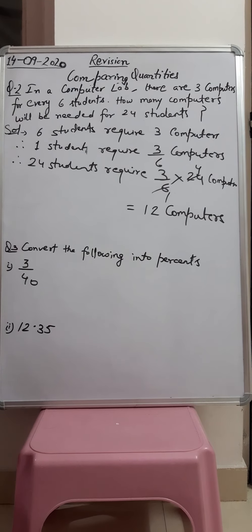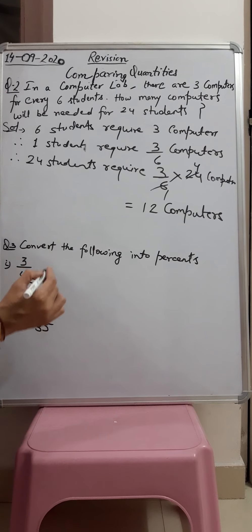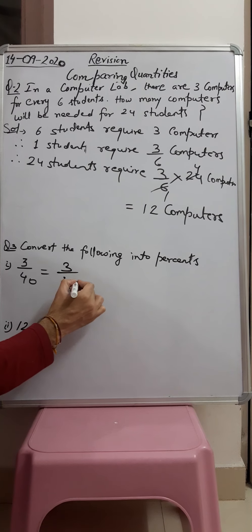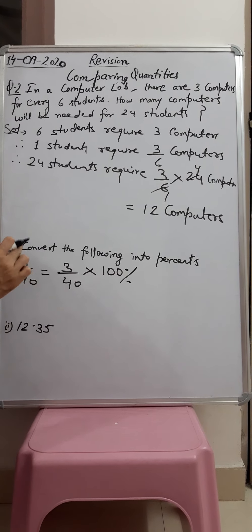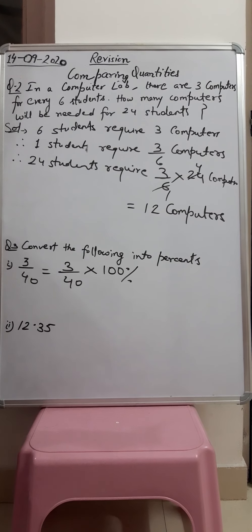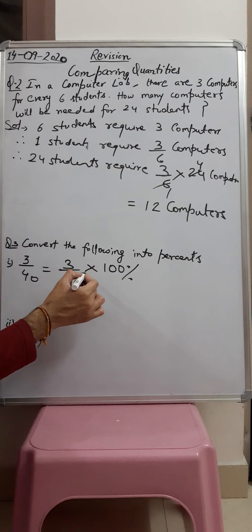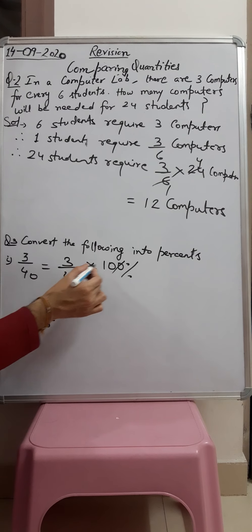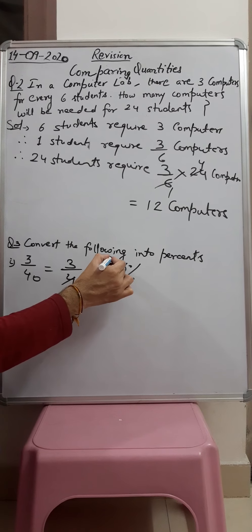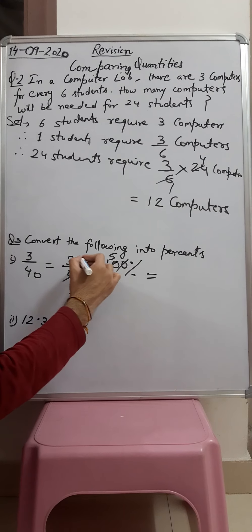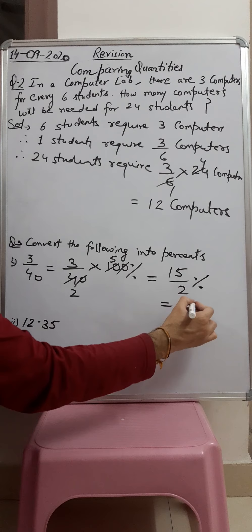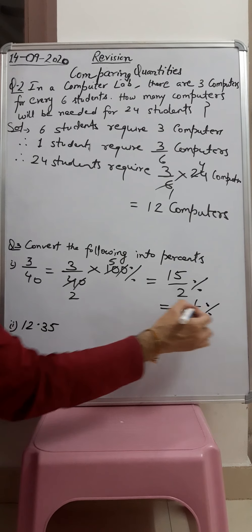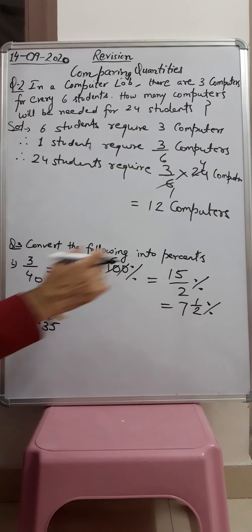Question number 3: convert the following. We have been given a fraction and we have to change it into percentage. Simply multiply 3 upon 40 by 100%. Cancelling one zero with one zero, we get 3 upon 4 multiplied by 10. Then 4 goes into 40 ten times, giving 3 into 5 equals 15 upon 2 percent, which we can write as 7 and 1 upon 2 percent. In this way we can change a fraction into percent.